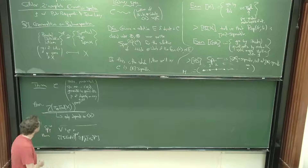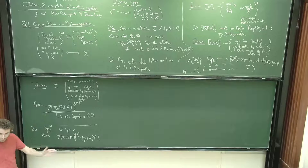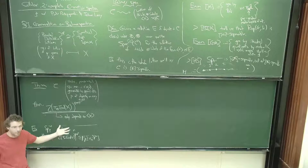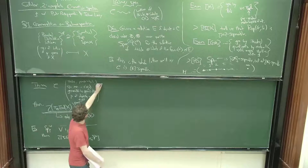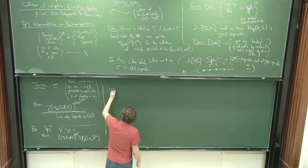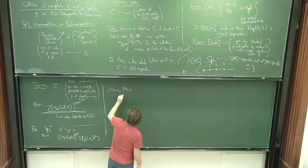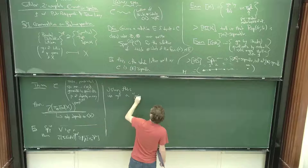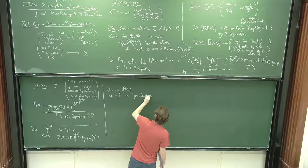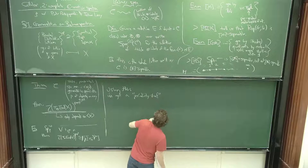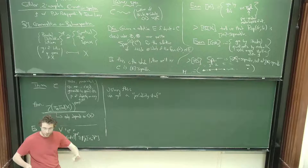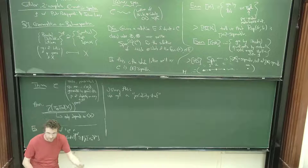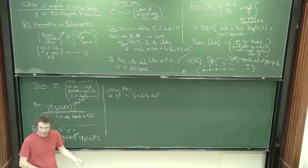With this theorem and a little bit more, this lets us put a sheaf on the closed sets with quasi-compact open complement of the Balmer spectrum, which I call the periodicity sheaf. It really is a sheaf in the sense that if I have a closed set that's a union of two other closed sets, I really do get a Mayer-Vietoris excision square for gluing these things together.